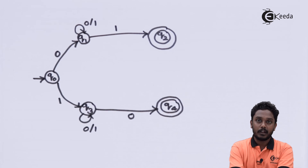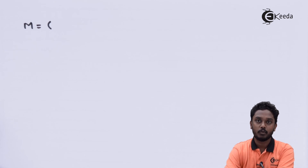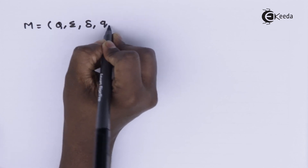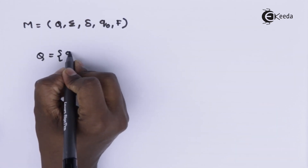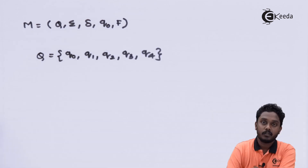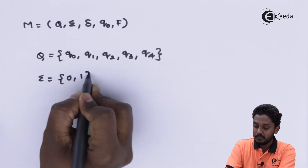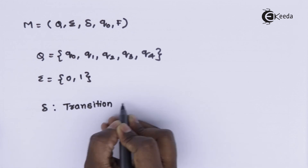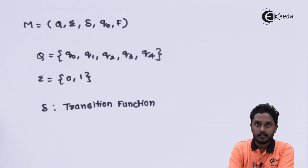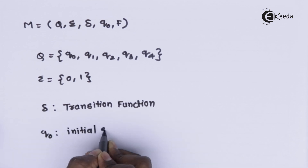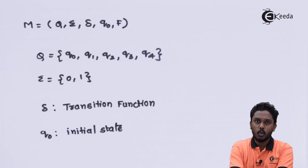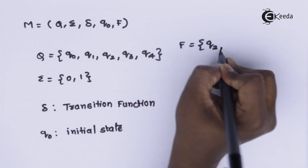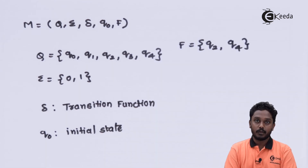I have constructed the required NFA. It has states Q0, Q1, Q2, Q3, and Q4. Naming the machine M, the components are Q, sigma, delta, Q0, and F. Q contains the set of states. Sigma is the binary alphabet 0 and 1. Delta is the transition function. Q0 is the initial state. The final states F contain Q2 and Q4. We have thus constructed both the regular expression and NFA for this question, completing this topic.